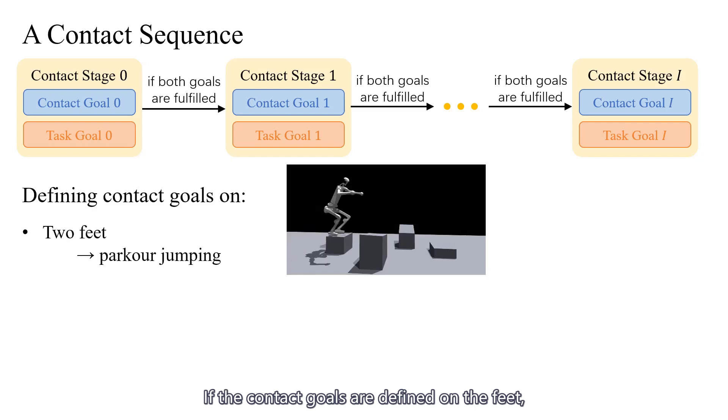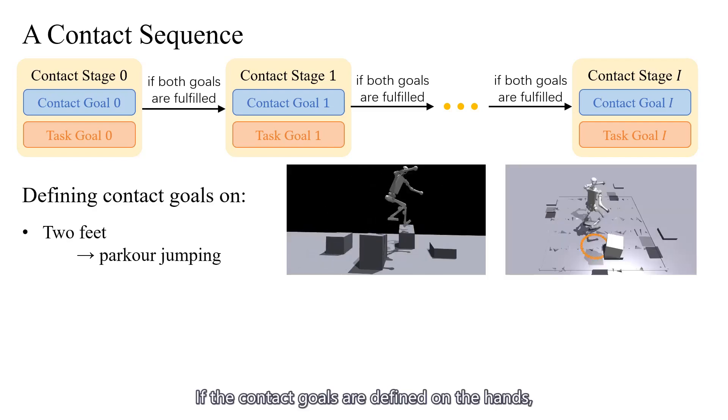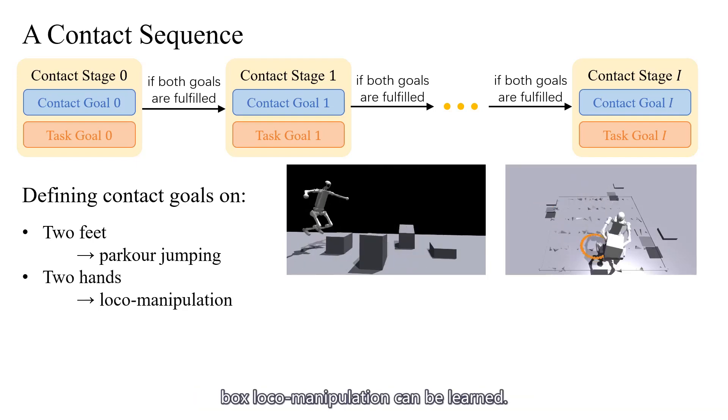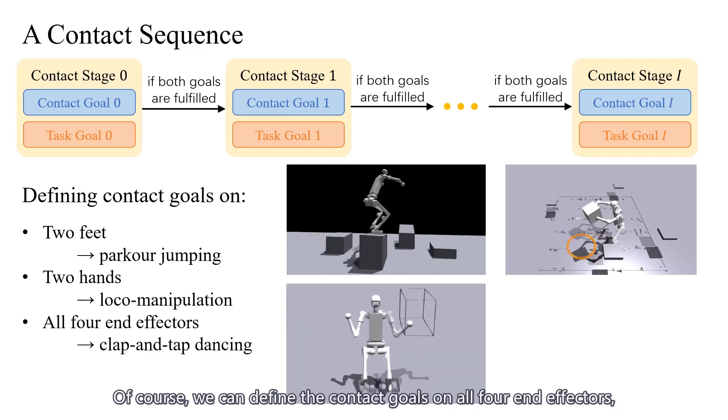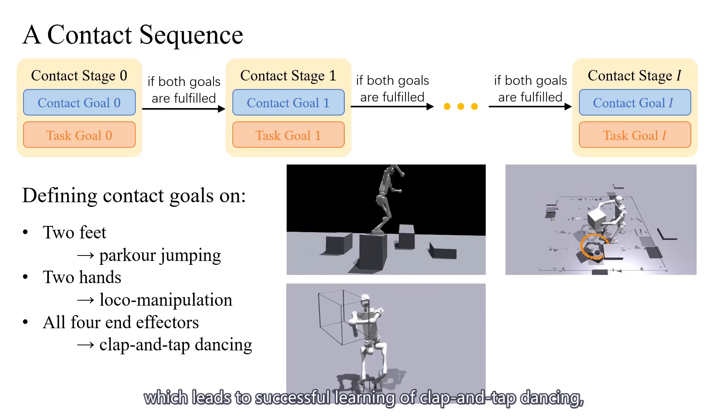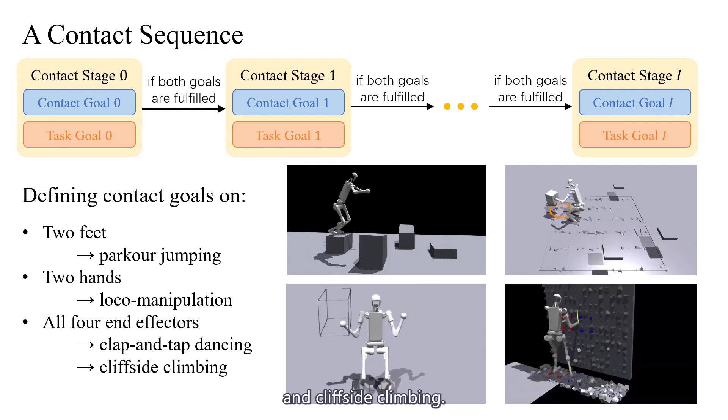If the contact goals are defined on the feet, we can learn parkour jumping policies. If the contact goals are defined on the hands, loco manipulation can be learned. Of course, we can define the contact goals on all four end effectors, which leads to successful learning of clap and tap dancing, and cliffside climbing.